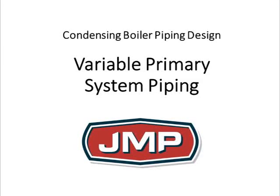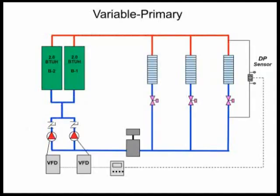Variable primary. What does a variable primary system look like? Here's a good example: a couple of boilers, a couple of variable speed pumps, an air separator, expansion tank, and some coils. People started designing systems this way so that the boilers always saw the lowest return water temperature. This arrangement can also save you some pump energy because you have variable flow from one end of the system to the other.